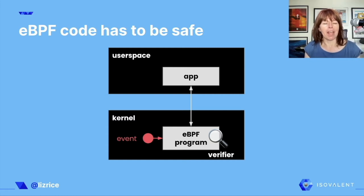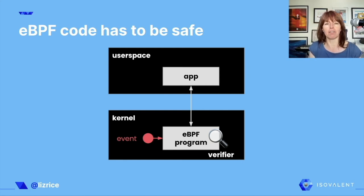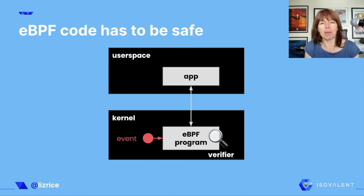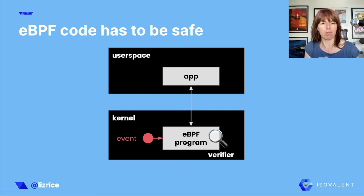When we run an eBPF program, it has to not crash the kernel and must not leave the kernel in an infinite loop. To ensure that an eBPF program is safe to run, there's a component called the verifier. The verifier checks, for example, that every time you have a pointer that you want to dereference, you check that it's not nil first. eBPF programs are limited in what memory they can access, and the verifier also checks for things like not falling into an infinite loop. Because the verifier ensures eBPF programs comply with these rules, eBPF is sometimes described as a sandbox.